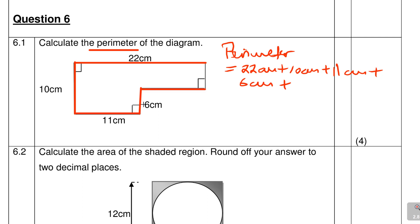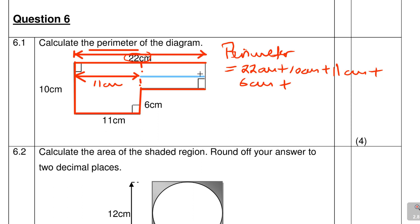Now we need to be careful and find this unknown distance. We know from here to here it's 11 centimeters, and the full top distance is 22 centimeters. So if 11 plus something equals 22, that unknown side must be 11 centimeters. So we add plus 11 centimeters.